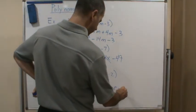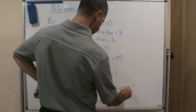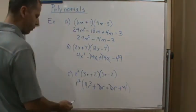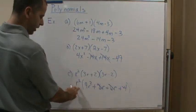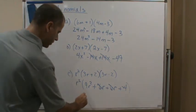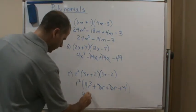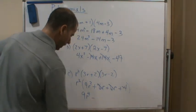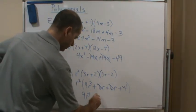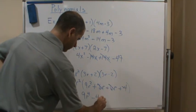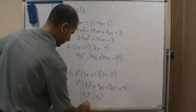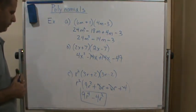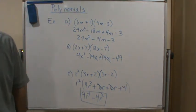distribute again, just the r squared. So now it becomes 9r to the fourth minus 4r squared, and that's it. See you next time.